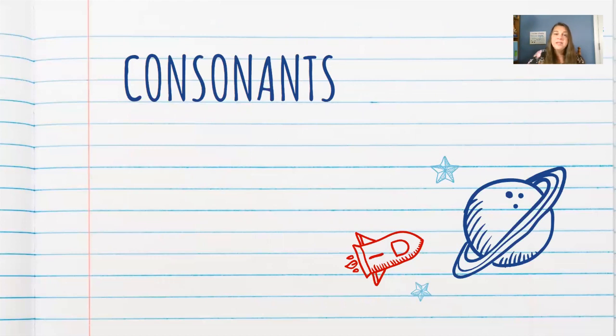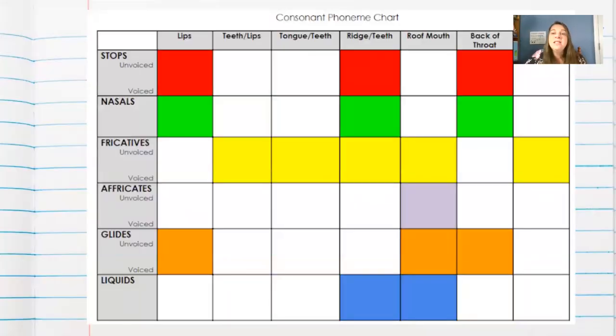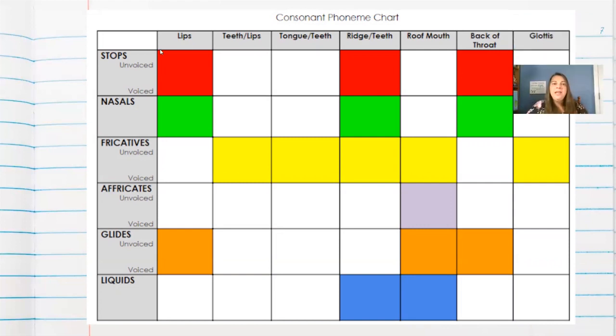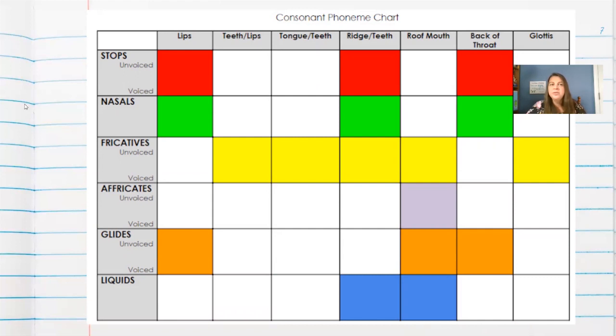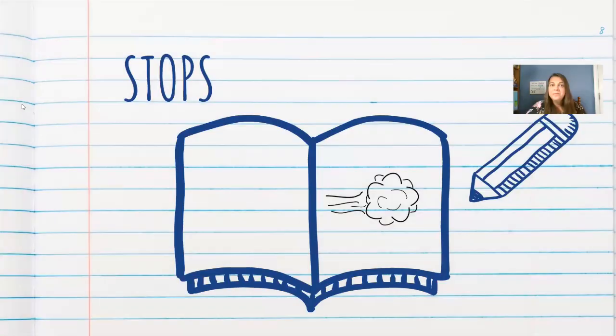Alright, so let's move through to starting with consonant sounds. So here we have the consonant phoneme chart, which helps us to understand that place and manner of articulation. So we have the answers to all of those lips, teeth, tongue types of questions up across the top row. And then down through the first column, we have the different types of sounds. And here you can see we'll have some unvoiced and voiced. I'll explain more what that means when we get into the first section of sounds. So without any further ado, let's move on to stop sounds.